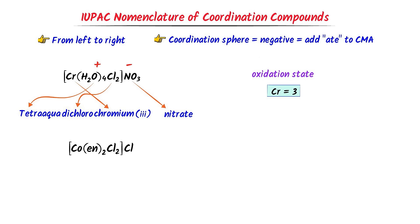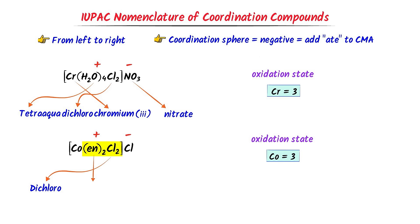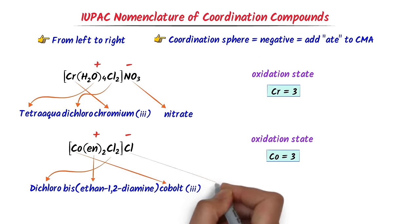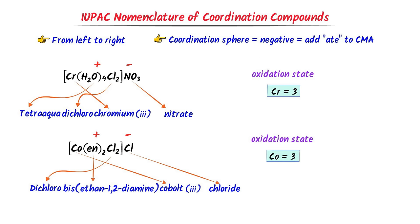Now in case of this coordination compound, I write positive charge and negative charge. The oxidation state of cobalt is 3. In the coordination sphere, there are two ligands: en and chlorine. According to the rule, for two chlorine ions I write 'dichloro'. For two en molecules, I write 'bis(ethane-1,2-diamine)'. For the central metal atom, I write 'cobalt'. The oxidation state of cobalt is 3. For the chlorine counter ion, I write 'chloride'. Thus I get 'dichlorobis(ethane-1,2-diamine)cobalt(3) chloride'.